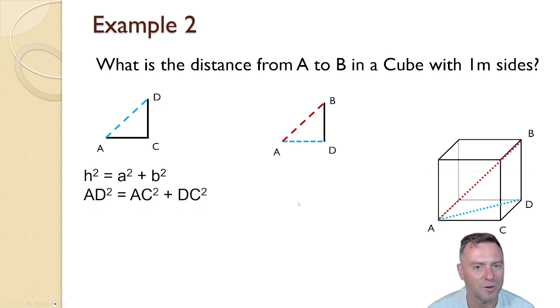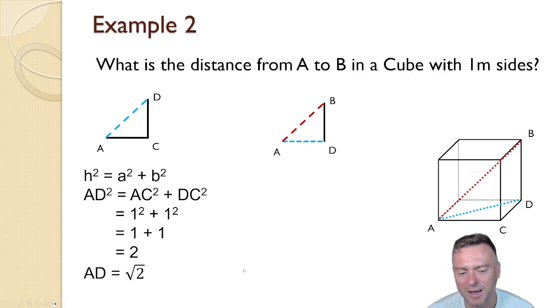So to do this we go h squared is equal to a squared plus b squared. We substitute in what we know, so AD - the distance from A to D - is equal to AC squared plus DC squared, which gives us 1 squared plus 1 squared which equals 1 plus 1 which equals 2. So then we can just do the square root of 2 and then leave it as that. Now I'm leaving it as that because we're actually going to reuse the root 2 in the next calculation. So rather than solving that and getting 1.414 blah blah blah, we can keep it in the square root of 2, which makes it heaps easier.